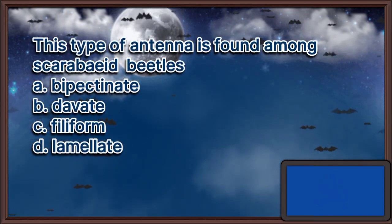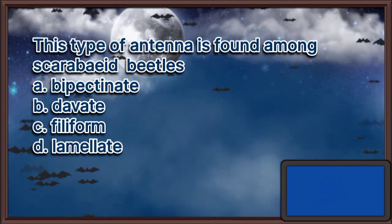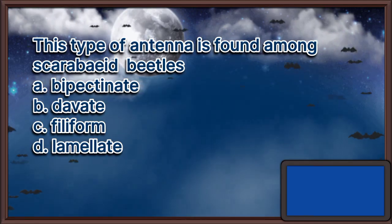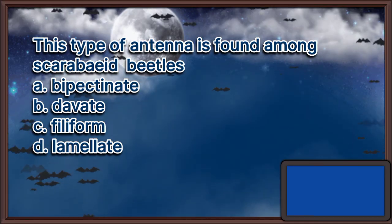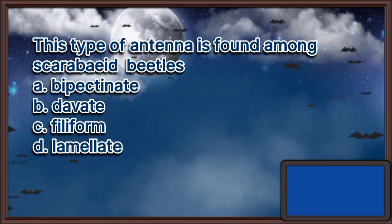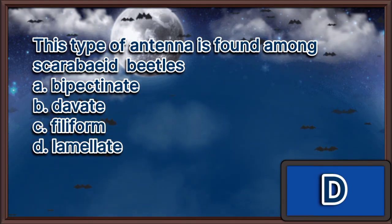This type of antenna is found among Scarabaeidae beetles. A. Bipectinate. B. Clavate. C. Filiform. D. Lamellate. The answer is letter D.